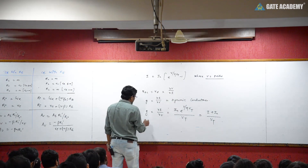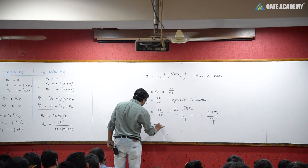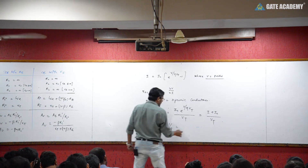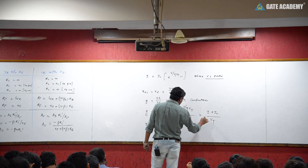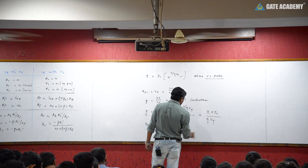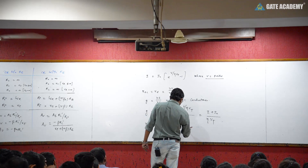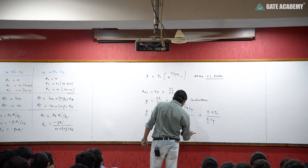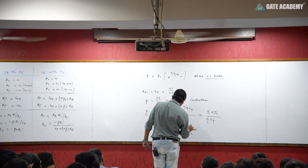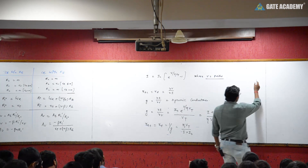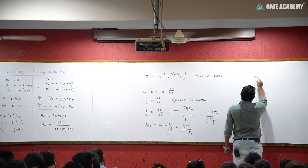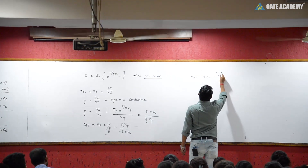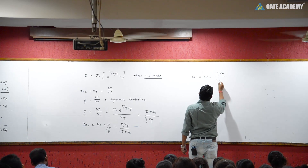So the dynamic conductance g equals (I plus I₀) divided by eta Vt. Dynamic Resistance and AC Resistance is the answer 1 by g, which gives RAC or RD equal to eta Vt upon I plus I₀.